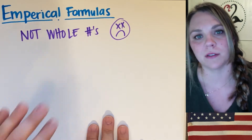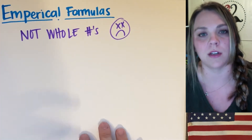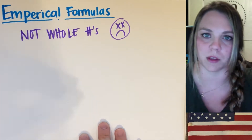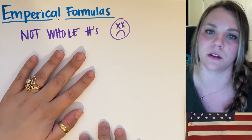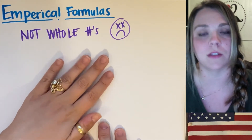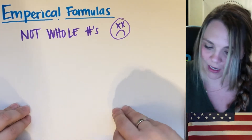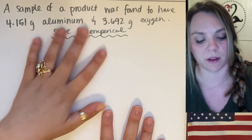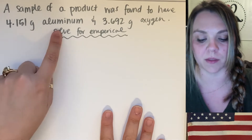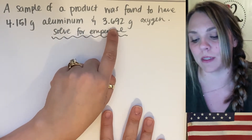So empirical formulas — remember you're trying to find the simplest version of the molecular formula. But what happens when you do your dividing and you're getting answers that are not whole numbers? Because for chemical formulas you have to have whole numbers. Here's an example: a sample of a product was found to have 4.15 grams of aluminum and 3.692 grams of oxygen. Solve for the empirical formula.